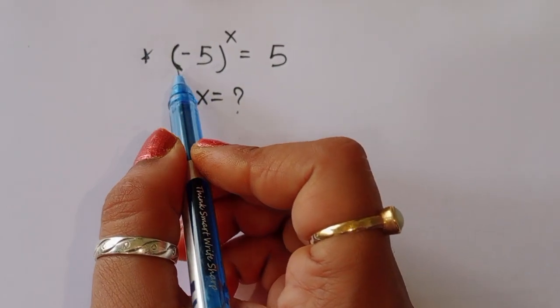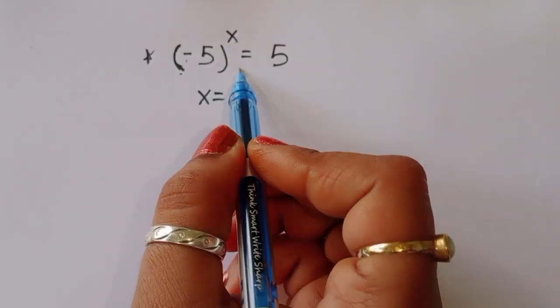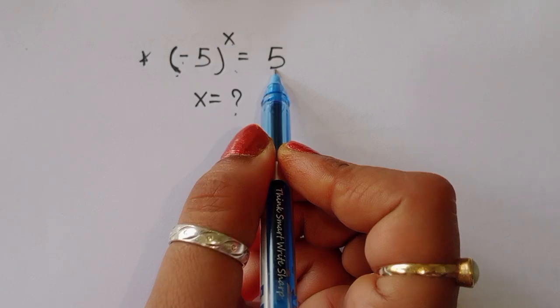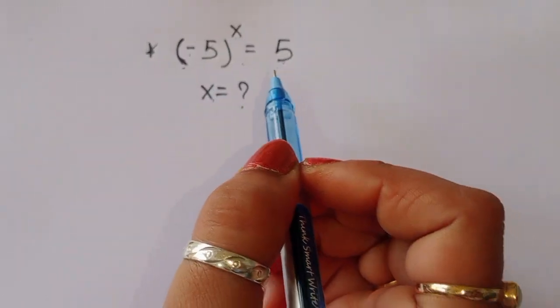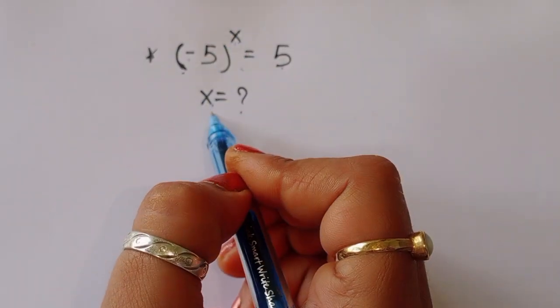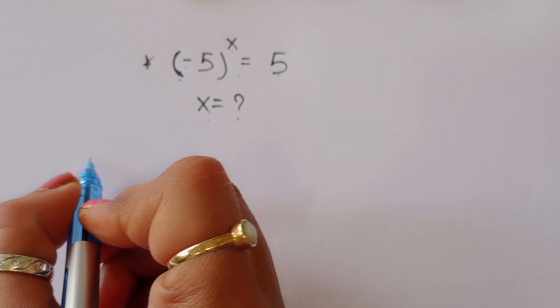The question given is: minus 5 power x is equal to 5. We have to find out the value of x here. Let's see the solution.